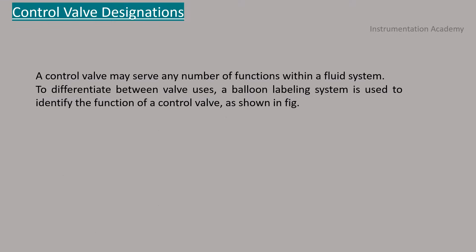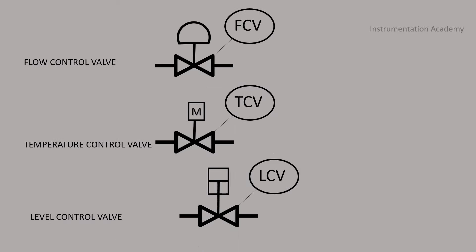Control valve designations. A control valve may serve any number of functions within a fluid system. To differentiate between valve uses, a balloon labeling system is used to identify the function of a control valve as shown in the figure. The common convention is that the first letter used in the valve designator indicates a parameter to be controlled by the valve. The second letter is usually a C and identifies the valve as a controller. And the third letter is a V to indicate that the piece of equipment is a valve.